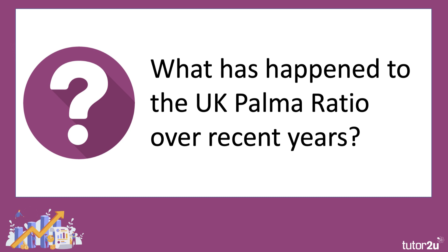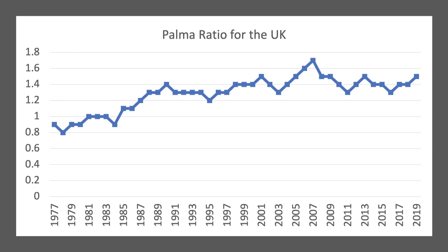What has happened to the UK Palmer Ratio over recent times? Here's a chart showing the data for the UK, and you can see it's gently sloping upwards. The Palmer Ratio has been above 1 since the mid-1980s — in other words, the top 10% of income households have more cumulative income than the bottom 40%. It peaked in 2006 on this data series, just before the global financial crisis a year or two later, and has fallen gently since.